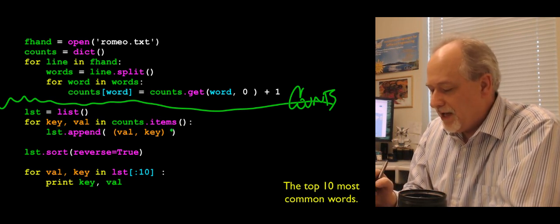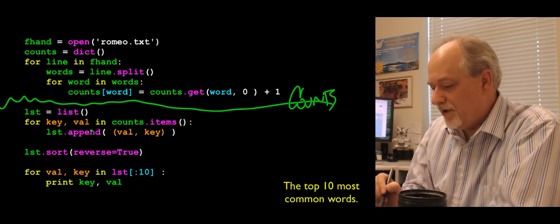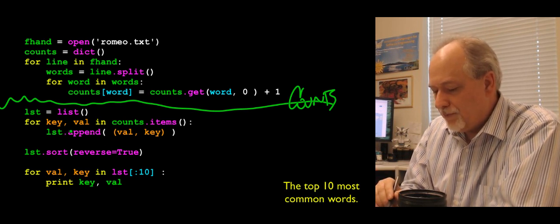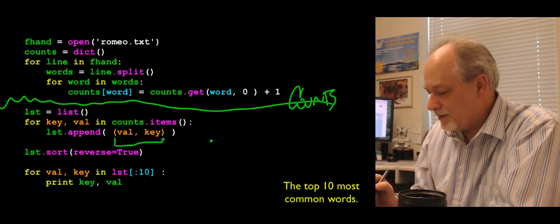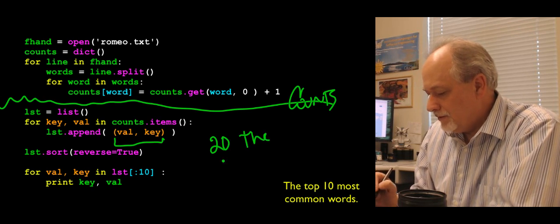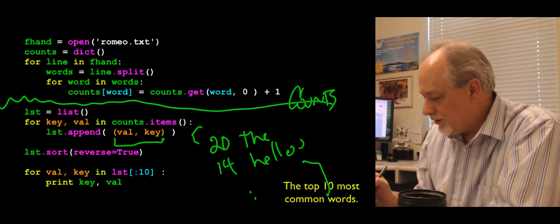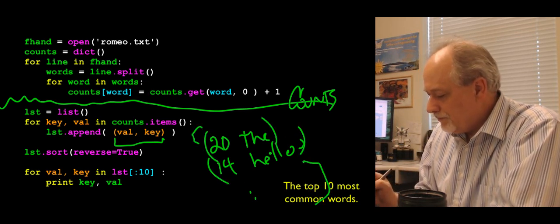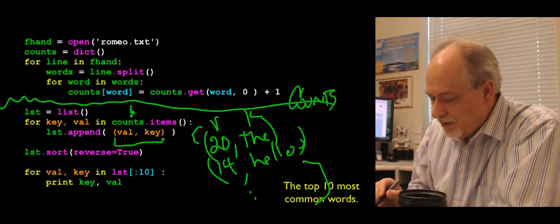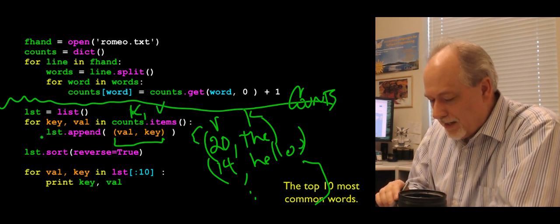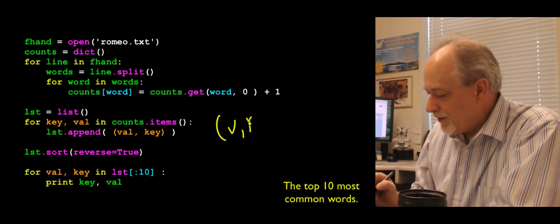Then what we're going to do is we're going to make a new list called lst. And now we're doing this key value in the items. So this is going to go through the key value pairs in this list, which is the key value pairs from the dictionary. But then we are going to create this temporary list of tuples that are val comma key. So val is like 20, the. 14, hello. And that's what the list is going to look like. It's going to be tuples, but it's going to be the value and then the key rather than the key and the value. This one here is key value. This one here, lst, is value key.